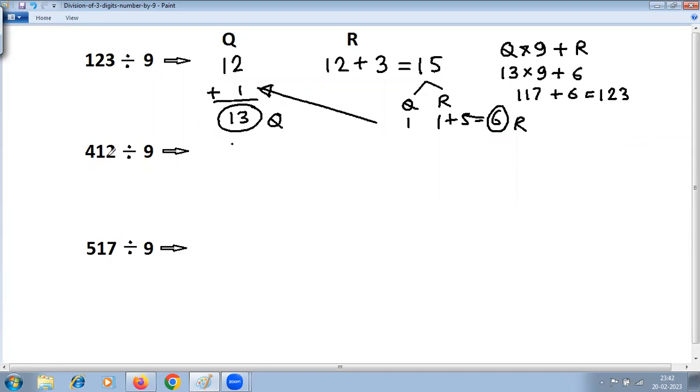So let's take the second. Remove the last digit, so 41. 41 plus 2 equals 43. 43 is above 9, so find quotient and remainder again.